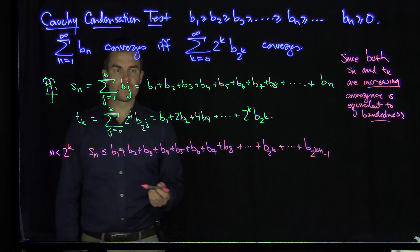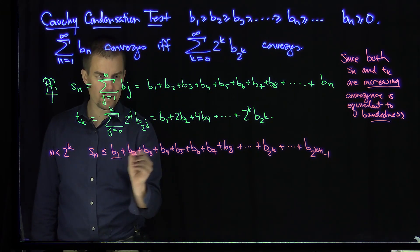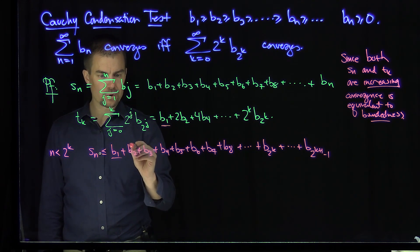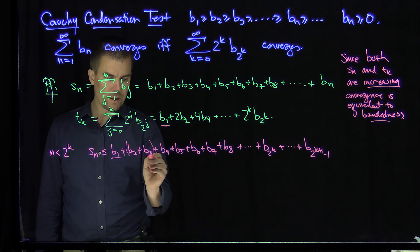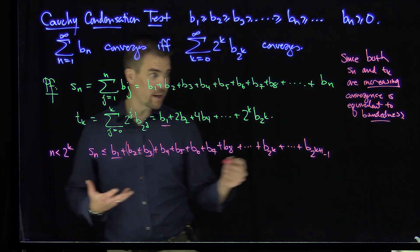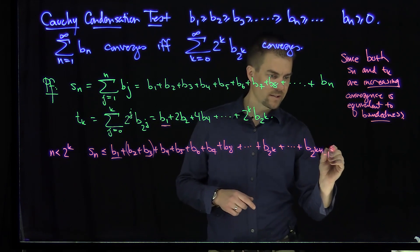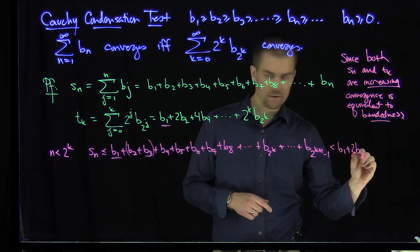And so now the idea here is I'm going to try to bound this by T to the power of k. So over here I have a B1, that's good. Then if I group these next two terms, I can make this bigger by turning the B3 into B2 and make it bigger. And so that'll be two copies of B2. So I can say this is less than B1 plus two copies of B2.